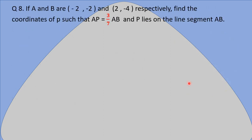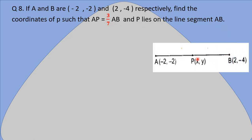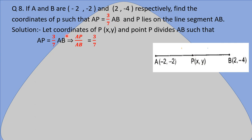Question number 8: if A(-2, -2) and B(2, -4), find the coordinates of P such that AP = (3/7)AB and P lies on line segment AB. We are given AP = (3/7)·AB. Transposing AB to the left side gives AP/AB = 3/7.